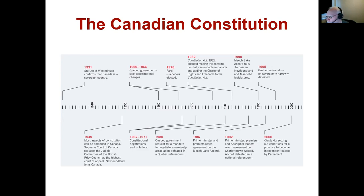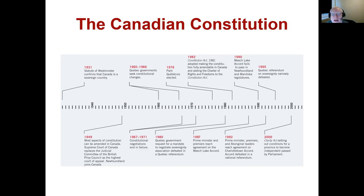The 1982 act added an amendment formula to the existing constitution along with the Charter of Rights and Freedoms. In 1987, the prime minister and premiers reached agreement on the Meech Lake Accords. In 1990, the Meech Lake Accords failed to pass in Newfoundland and Manitoba legislatures. This was another formula for constitutional amendment and updating further where there was dissatisfaction with 1982. It required extensive negotiation because constitutional change is very difficult, and it failed to get sufficient support. In 1992, prime ministers, premiers, and Aboriginal leaders reached agreement on the Charlottetown Accord — that accord was defeated in a national referendum.